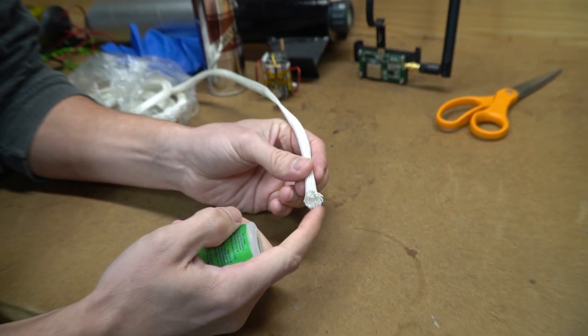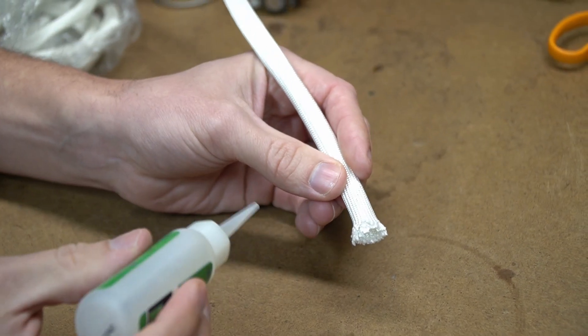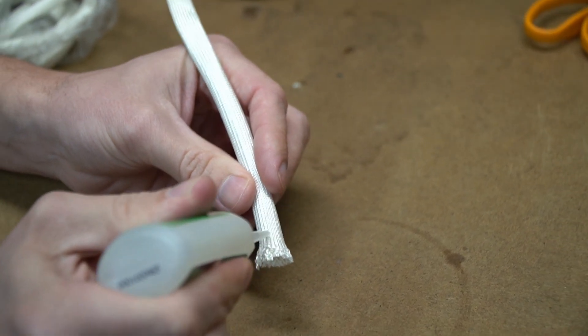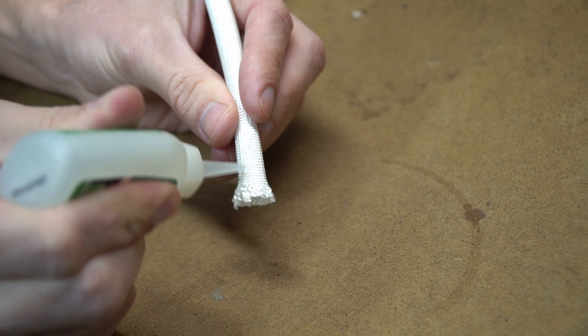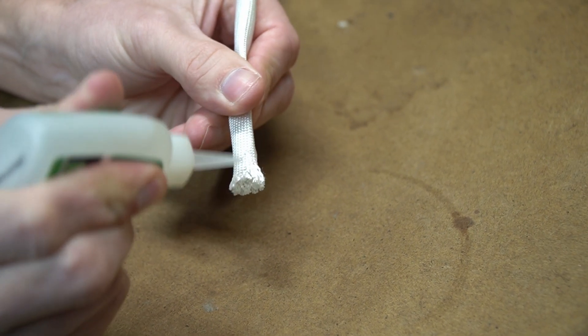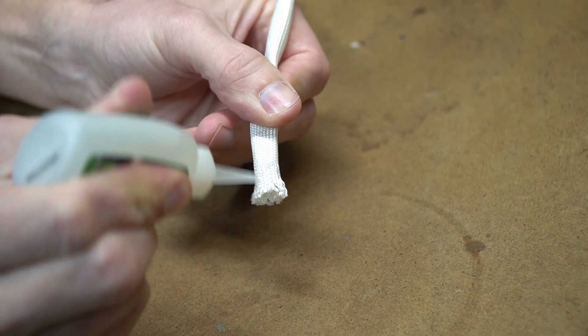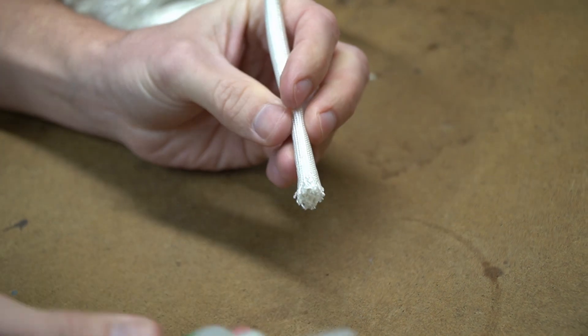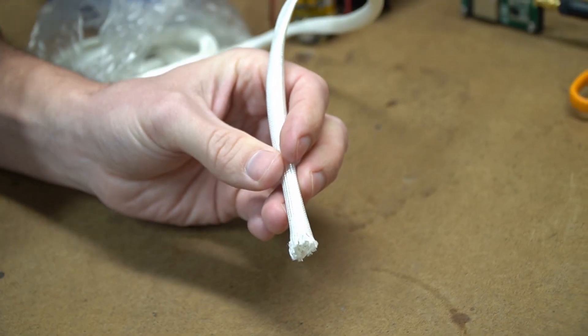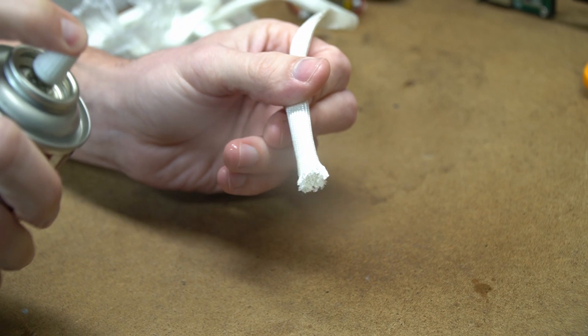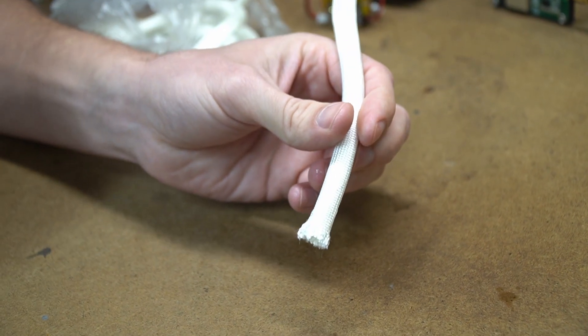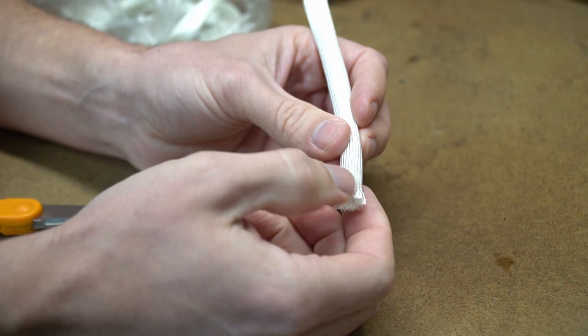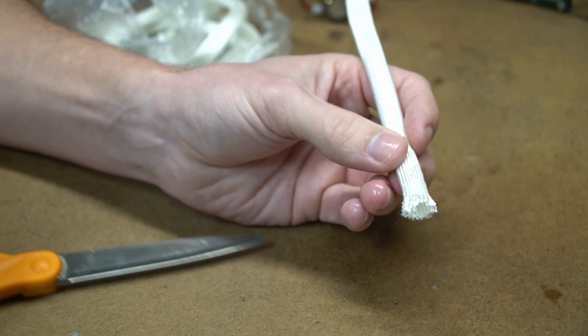This fiberglass insulation is going to fray over time. To keep that from fraying, what I'm going to do is take my thinnest CA glue and just let that soak in all the way around the fiberglass. The thinner the better, so it really soaks in. Then I'm just going to hit it with the activator. Once it's cured, I'll just cut it flush.